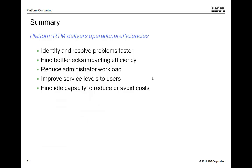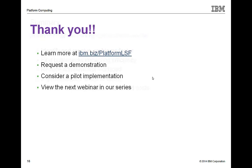In summary, Platform RTM helps us deliver operational efficiencies in several ways. I can identify and resolve problems faster, find bottlenecks impacting efficiency, and reduce administrator workload by addressing small problems before they become big problems. I can improve service levels to my users, helping ensure that jobs run faster and linger in queues for shorter periods of time. I can also often find idle capacity on the cluster and avoid unnecessary cost. To learn more about Platform RTM and other capabilities that can help improve the efficiency of your HPC cluster, you can visit ibm.com. From this website, you can make an inquiry, request a demonstration, or consider a no-obligation pilot on your own cluster.